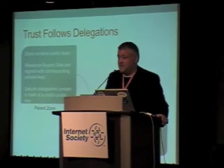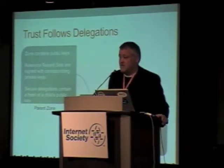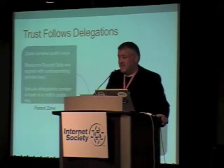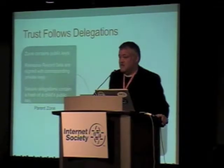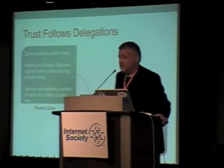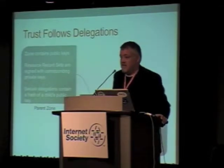Because as well as the NS records that you use to point to the name servers in a child zone, you also have a DS record — a delegation signer — which in effect is a hash of the public key used in the child. So if you have some trust in the parent zone, you can infer some trust in the child zone. That's how the whole thing fits together.